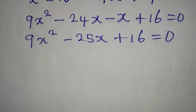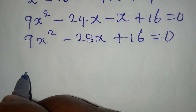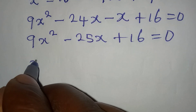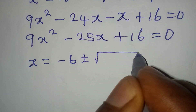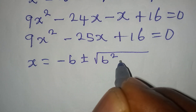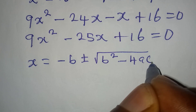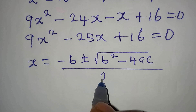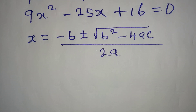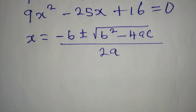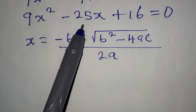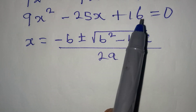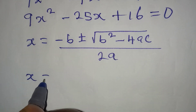We can deal with this using the quadratic formula: x equals minus b plus or minus square root of b squared minus 4ac, all over 2a. From here, our a is 9, our b is minus 25, and c is 16.